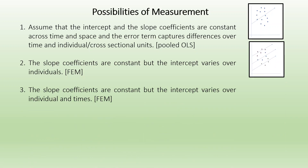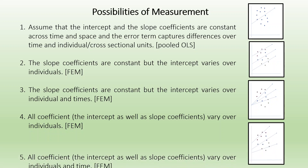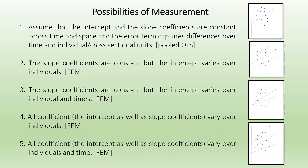The third possibility is that the slope coefficients are constant but the intercept varies over individuals and time. The fourth method is where all the coefficients — the intercept as well as slope coefficients — vary over individual and time.